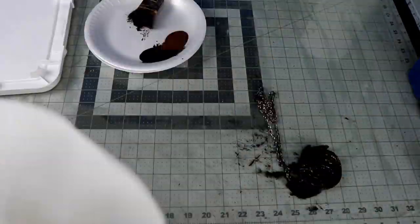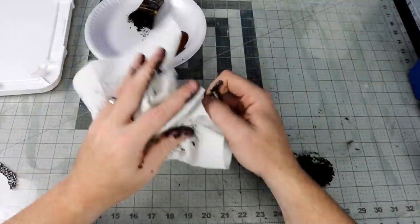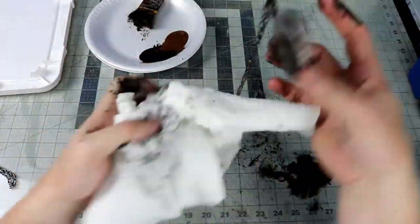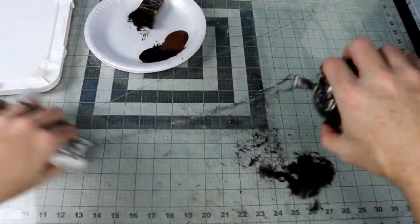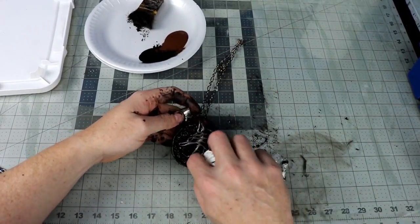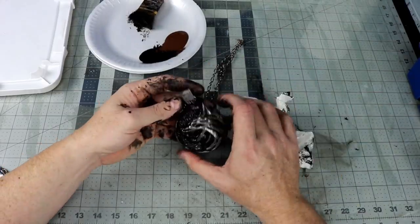My dirty version is going to get a wash in some black and brown multi-surface apple barrel paint. Push it in the crevices and wipe away the high points with a paper towel. The other one will get some plaid folk art dragonfly glaze to give it kind of a look of the medallion.